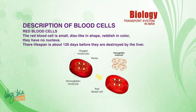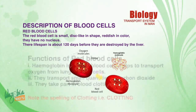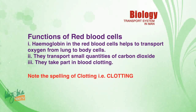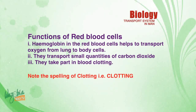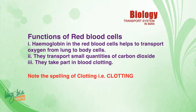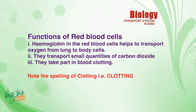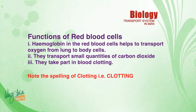Functions of red blood cells: one, hemoglobin in the red blood cells helps to transport oxygen from the lungs to the body cells; two, they transport small quantities of carbon dioxide; three, they take part in blood clotting. Note the spelling of clotting: C-L-O-T-T-I-N-G.